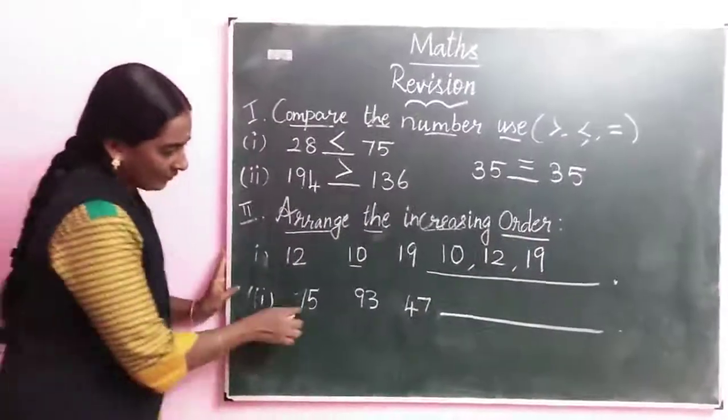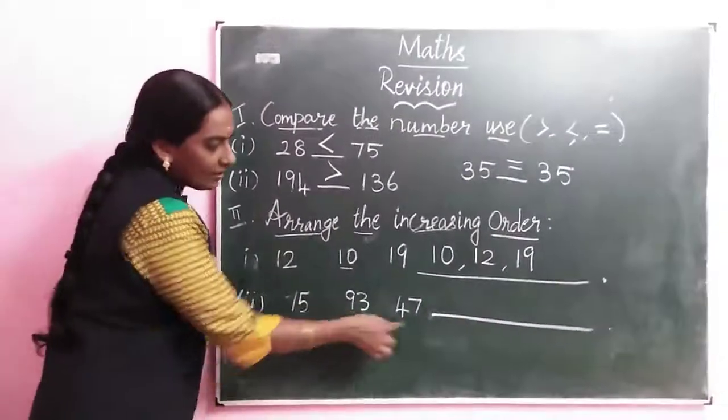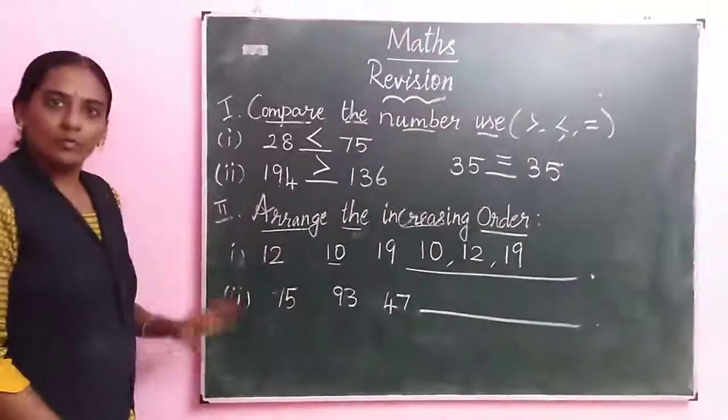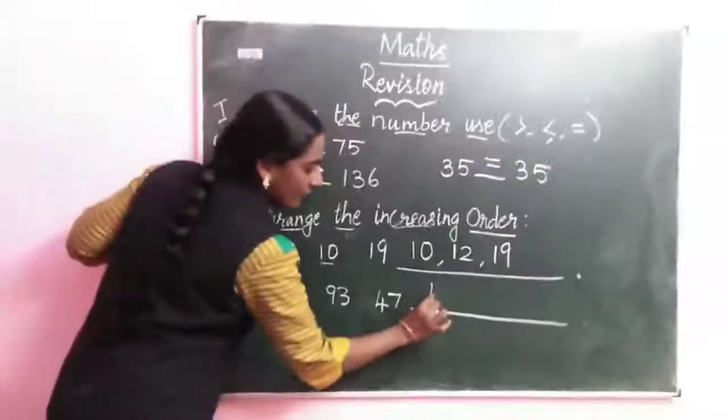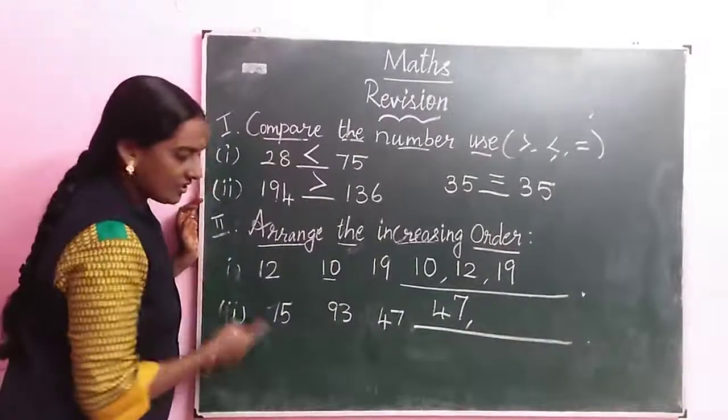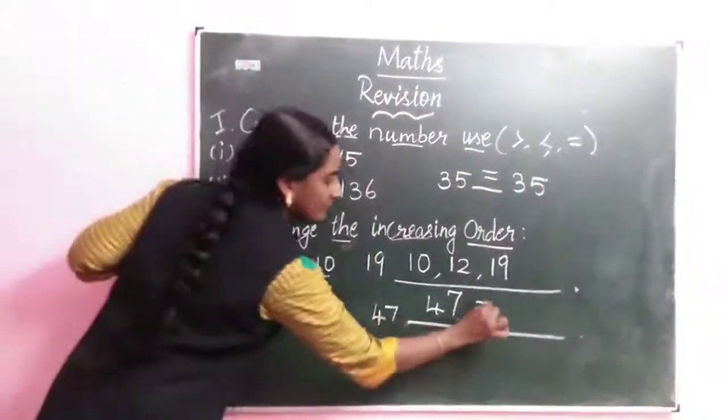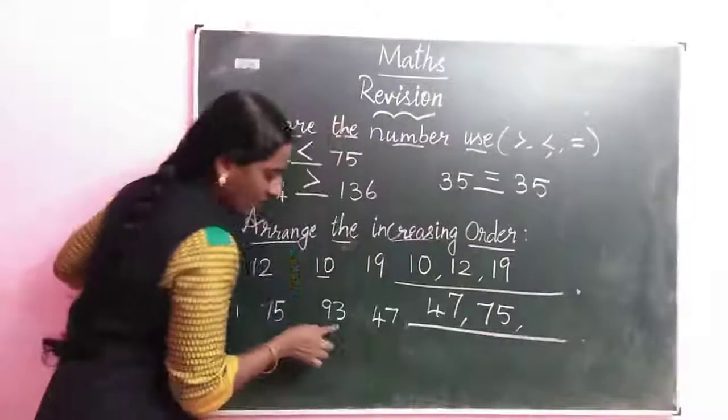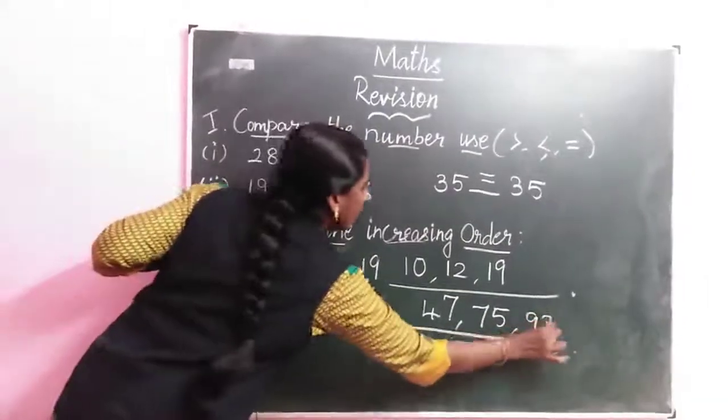Last number remaining is 19. Same type, second question: 75, 93, 47. Which is the small number? 47. Next, compare these two numbers. Which is a number? 75. So last one remaining, this number, 93.